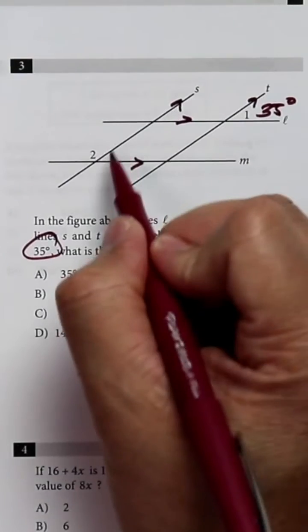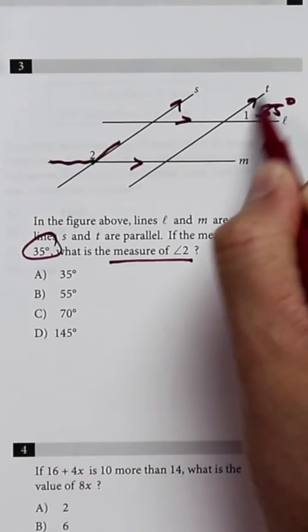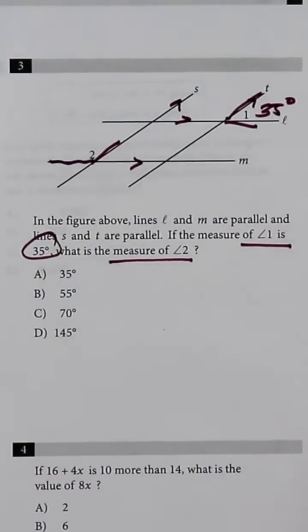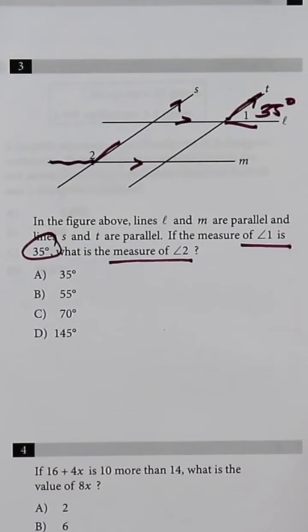And we are noticing that angle 2 and angle 1 are what we call a linear pair, which means if we add them up together, it's equal to 180 degrees.